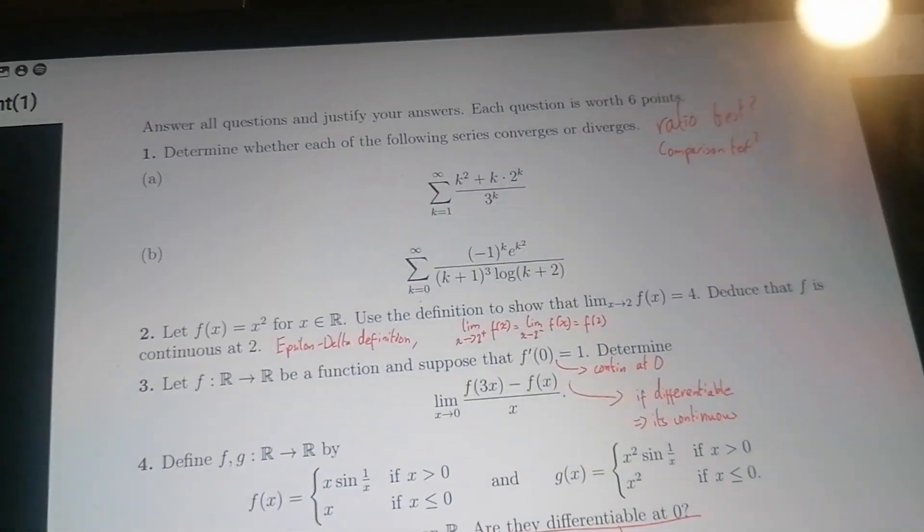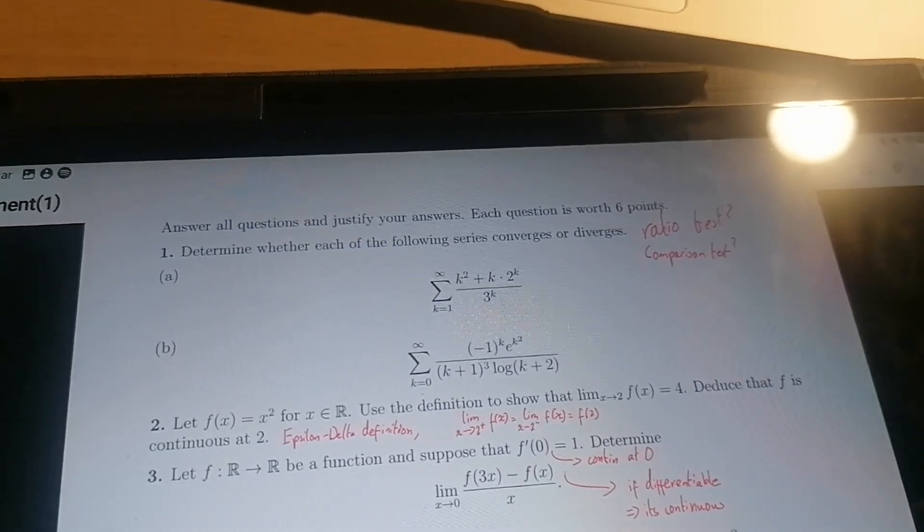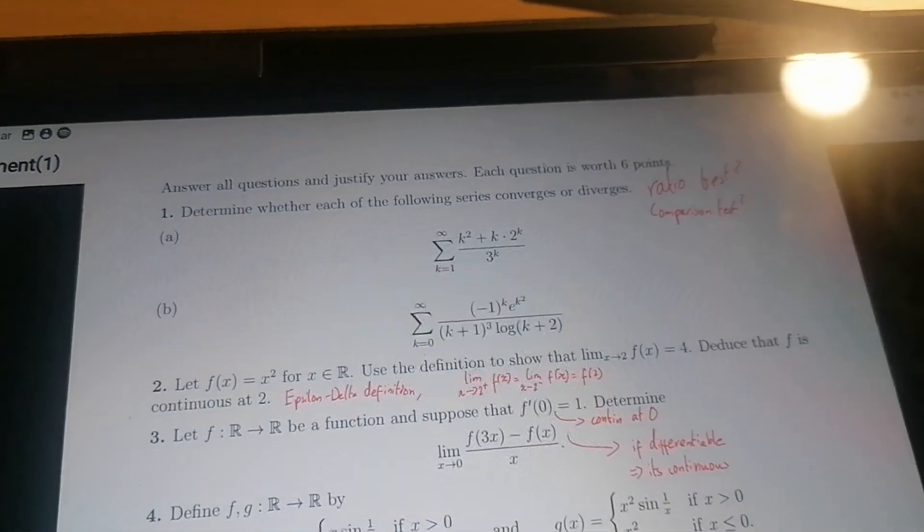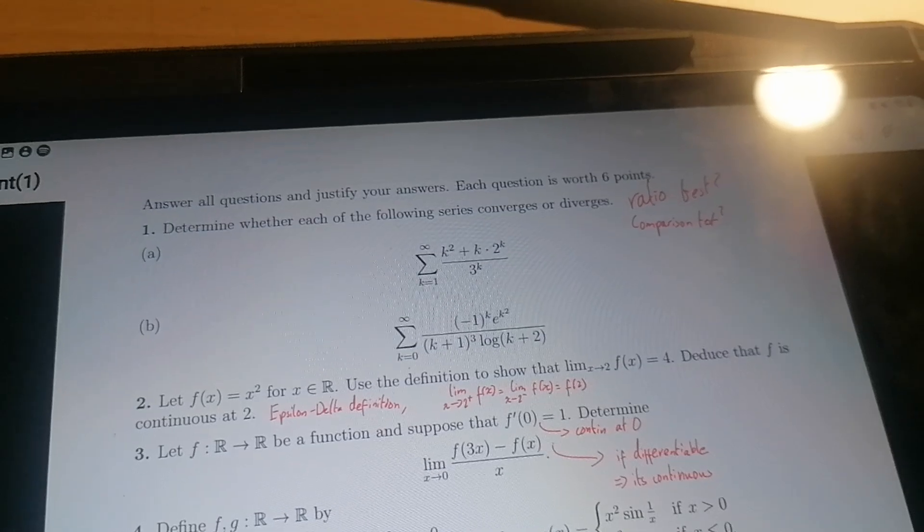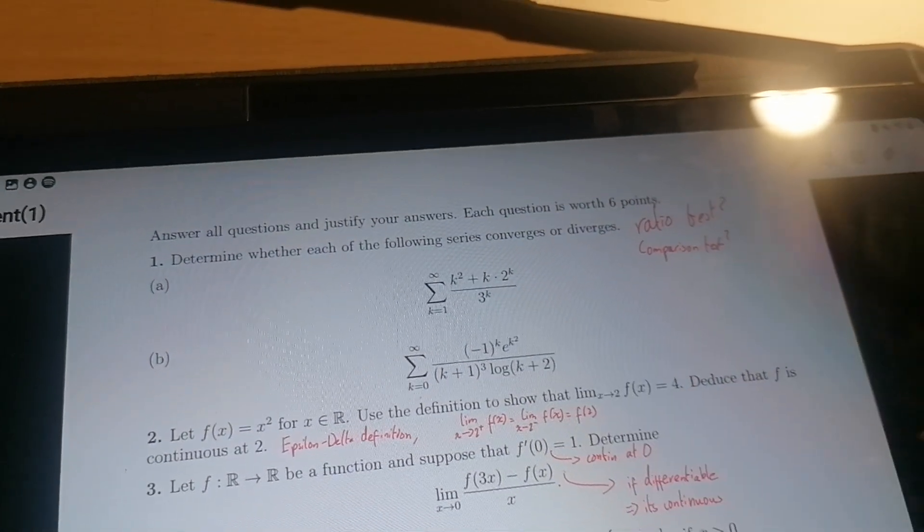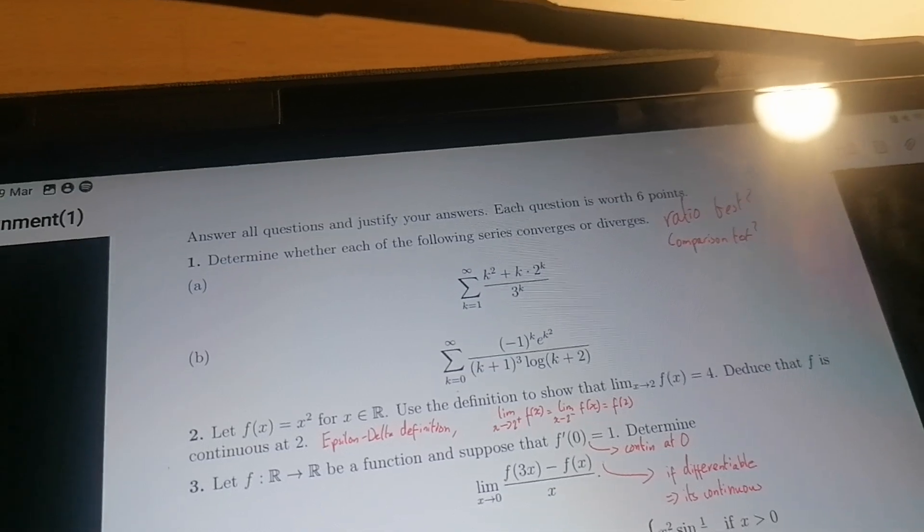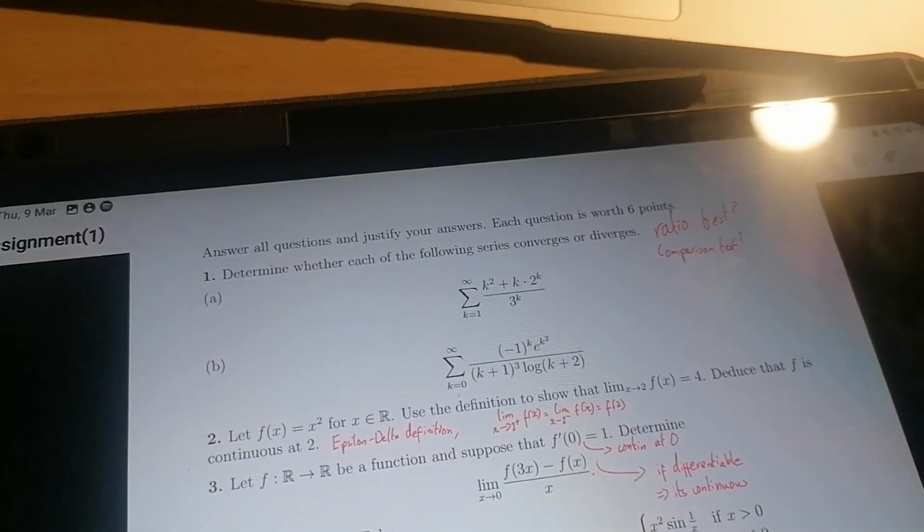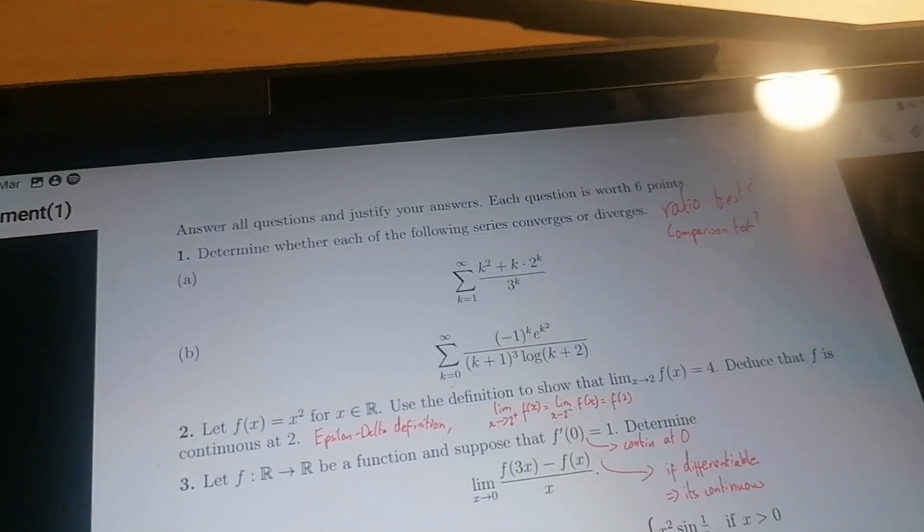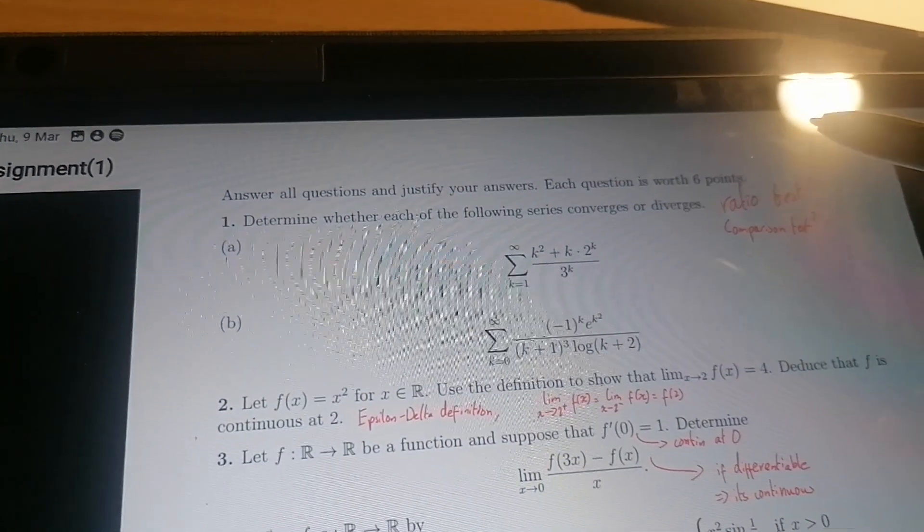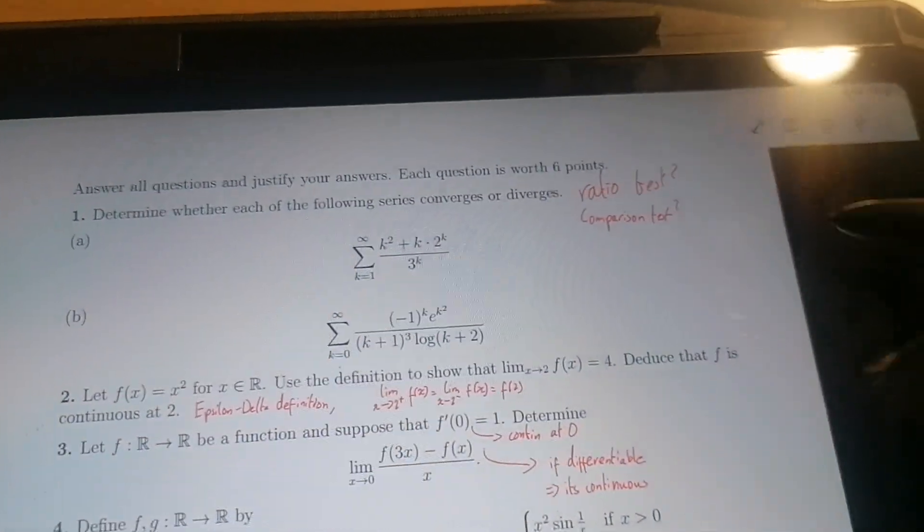For question one, I was thinking ratio test. In case it's called something else or you know another name, it's basically where if the ratio of subsequent terms - so let's say this is a_n, if a_{n+1} over a_n, the limit of that as n tends to infinity, if that limit is less than one then a_n tends to zero so it converges. I'm thinking of maybe trying that for these, but a friend of mine said they tried it and she couldn't really simplify it. She didn't say which one though.